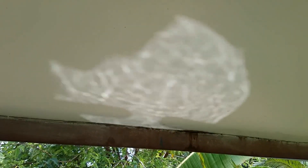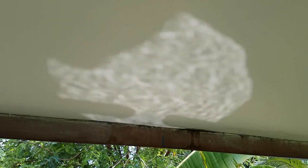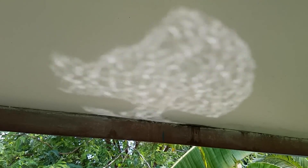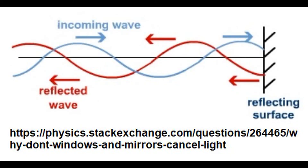This is a well-known pattern — the light waves meet each other. Sometimes they cancel each other out and then it is black. Sometimes they enhance each other and then it is bright white. This is called an interference pattern. When two light waves cancel each other, the result is darkness, and this is called destructive interference.